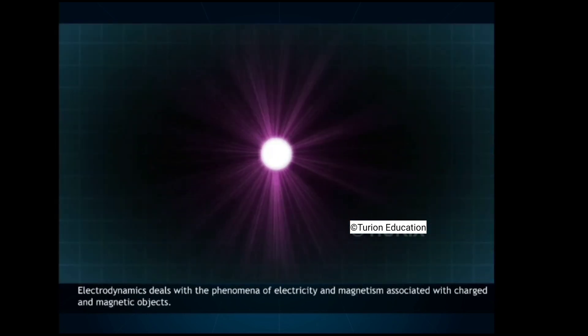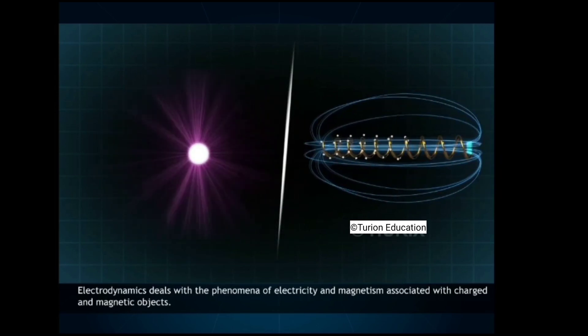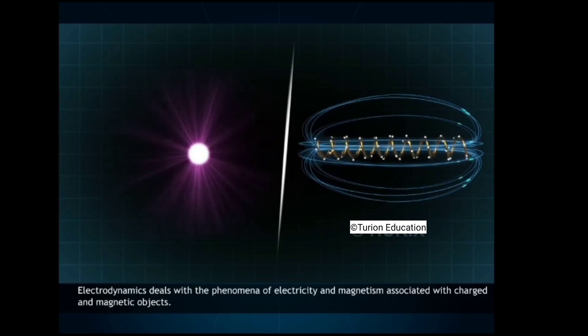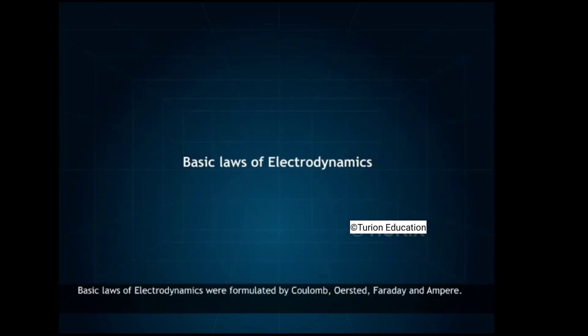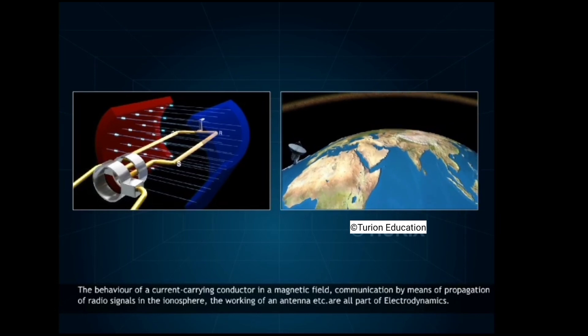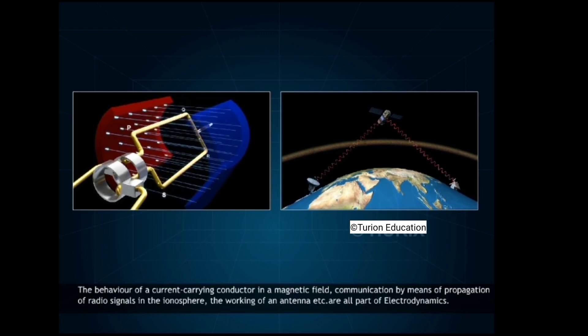Electrodynamics. Electrodynamics deals with the phenomena of electricity and magnetism associated with charged and magnetic objects. Basic laws of electrodynamics were formulated by Coulomb, Oersted, Faraday and Ampere. These laws were put down by Maxwell as a set of equations known to us as Maxwell's equations. The behavior of a current-carrying conductor in a magnetic field, communication by means of propagation of radio signals in the ionosphere, the working of an antenna, etc. are all part of electrodynamics.